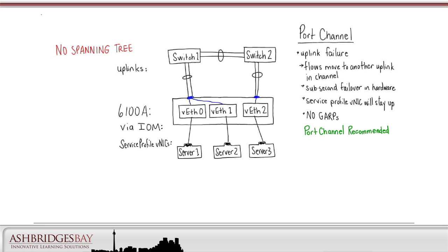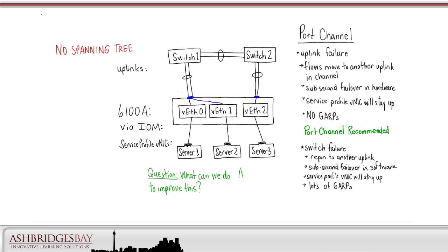With port channels to the upstream switches, what happens if we have an upstream switch failure? The vEthernet interface will be repinned to another port channel or uplink. The failover is software-driven and takes less than one second. The service profile vNIC will stay up. Lots of GARPs may be sent to speed upstream convergence. What technology can we deploy to improve this? We can use VPCs to connect the 6100 to both upstream switches. VPCs are recommended.